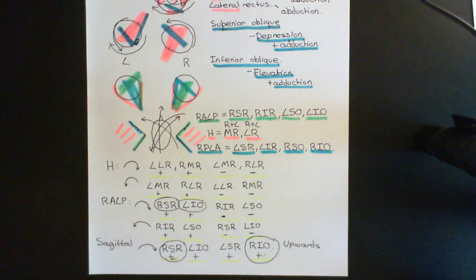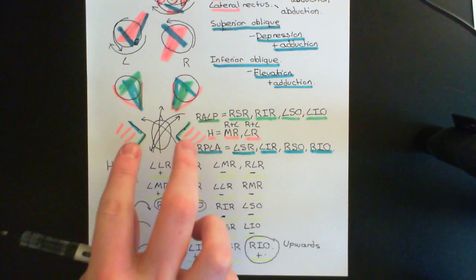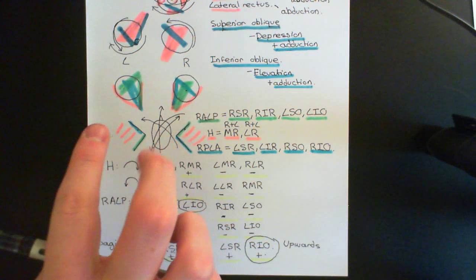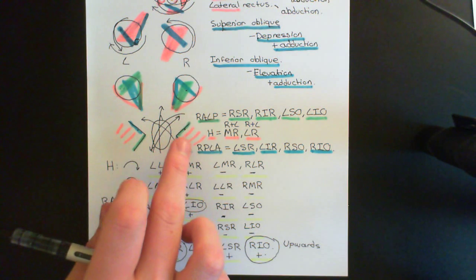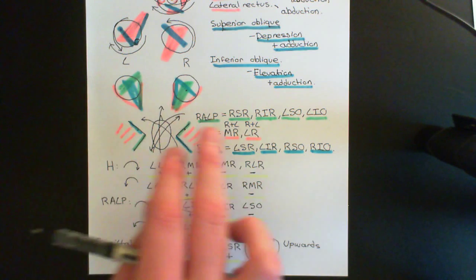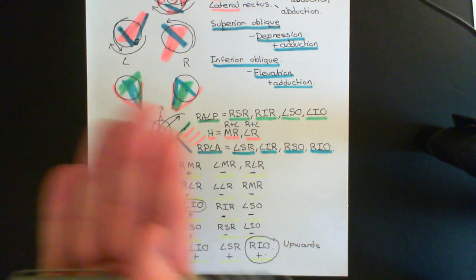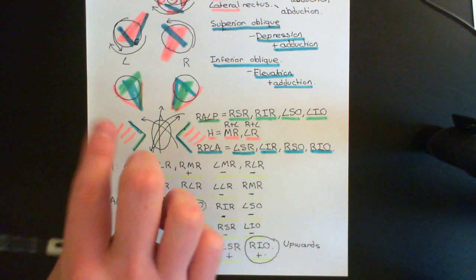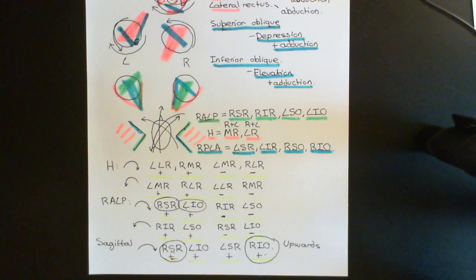When you rotate your head in one of these planes, you activate one semicircular canal and inhibit the other. The activated canal connects to the two muscles that rotate the eyes in the opposite direction in that plane, while the inhibited canal connects to the two muscles that would move the eyes in the same direction as the head.